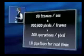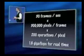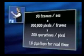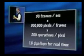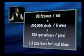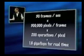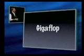QuickTime encoding: we've got 30 frames per second. A 640 by 480 image is 300,000 pixels per frame. We've got 200 operations per pixel to encode it. That's 1.8 gigaflops to do this in real time. This is the kind of stuff we want to do — this is the kind of stuff we are doing, except we're doing it slowly. So we think gigaflops are going to become a very popular thing in the near future. And this is how to get them.